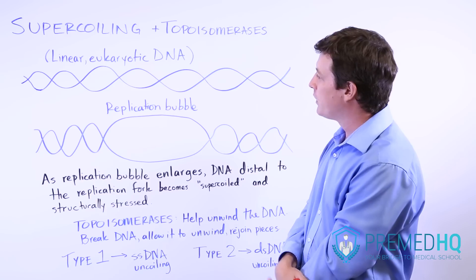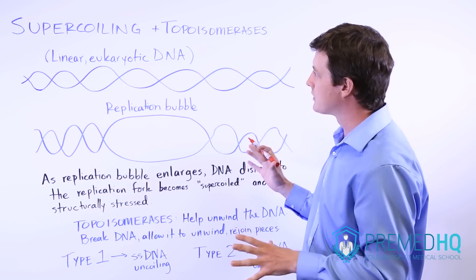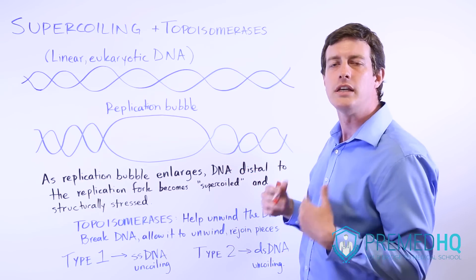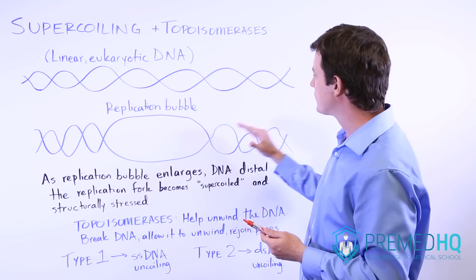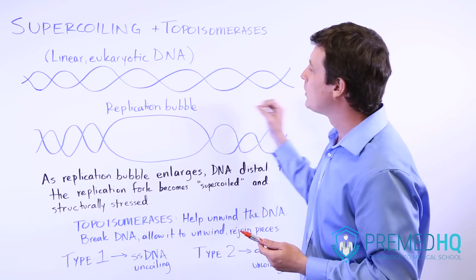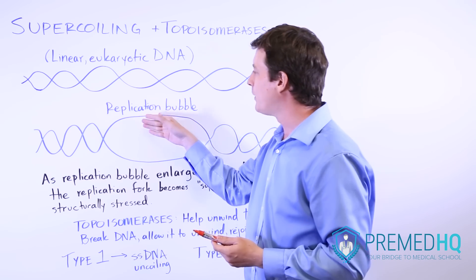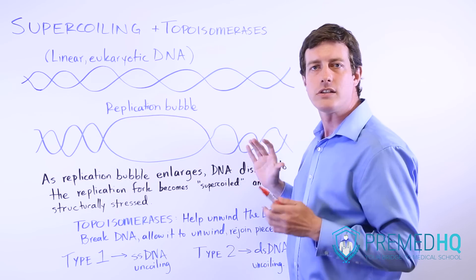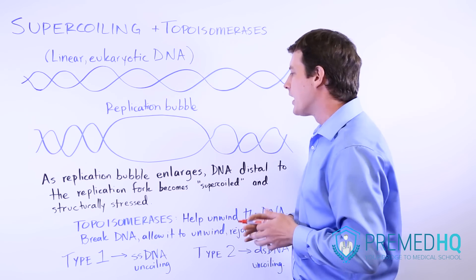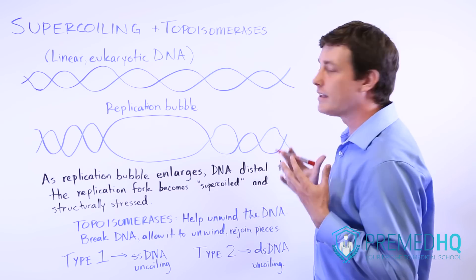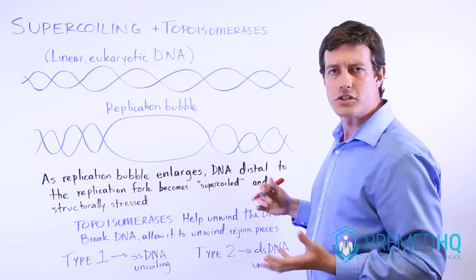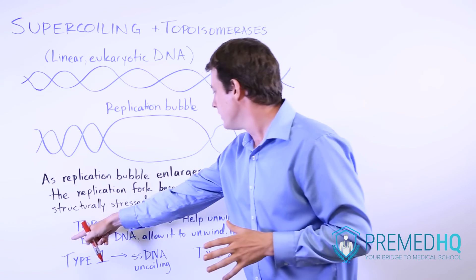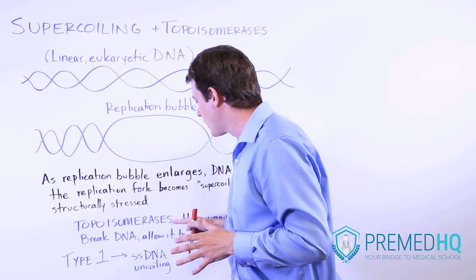In order to resolve this problem of supercoiling, you need to find a way to relieve that stress while still allowing the replication to proceed at these two replication forks. The way that is accomplished is by using something known as a topoisomerase.